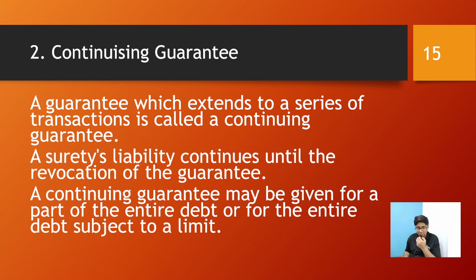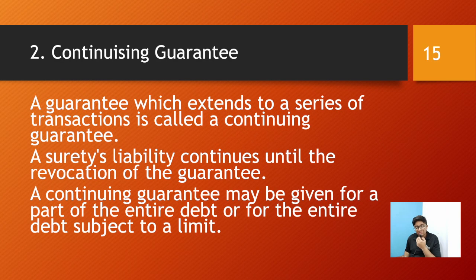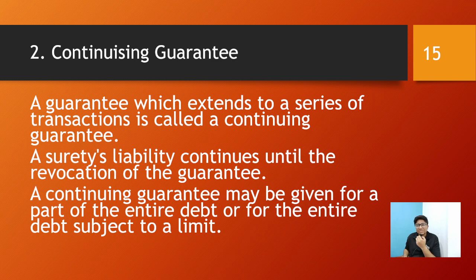The next kind is continuing guarantee. A continuing guarantee is one given for a series of transactions. A surety's liability continues until the revocation of the guarantee. Unlike a specific guarantee that ends when one transaction is over, a continuing guarantee must be specifically revoked. A continuing guarantee may be given for a part of the entire debt or for the entire debt subject to a limit — for example, only for 50% of transactions or up to ten thousand, whichever is lower.